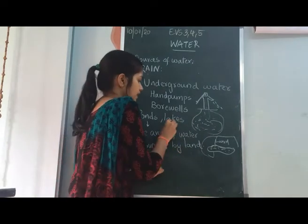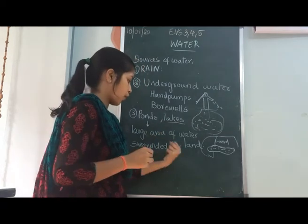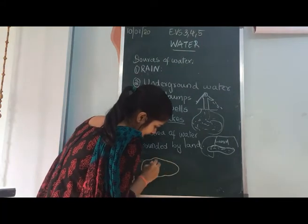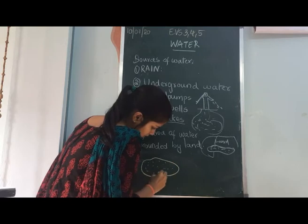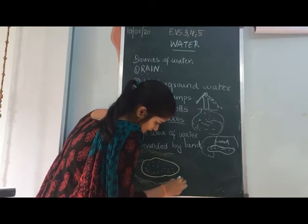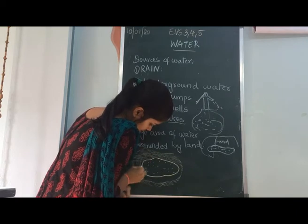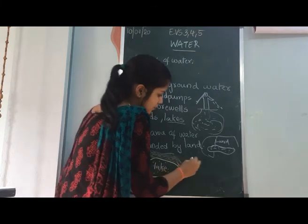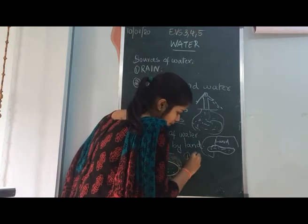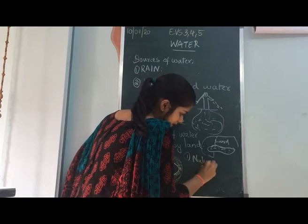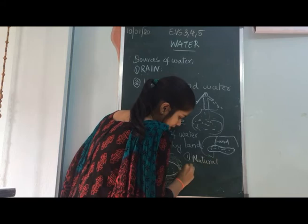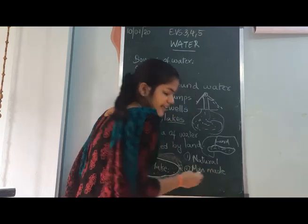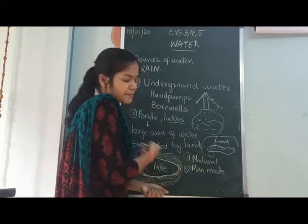Whereas a lake — lakes are also a kind of pond, but lakes are smaller in size. A lake also has land all around it with water in the center. Lakes are of two types: either natural, which are formed naturally, or manmade, which are made artificially by people.